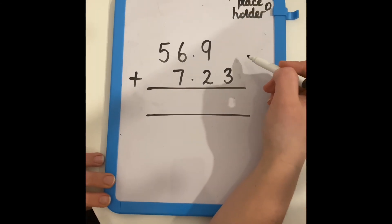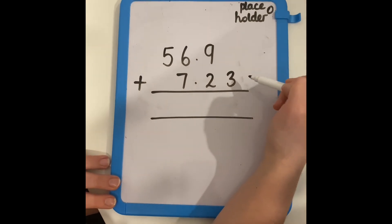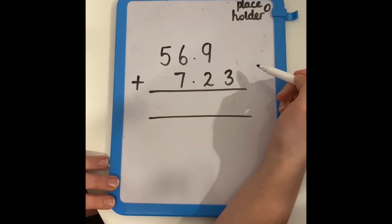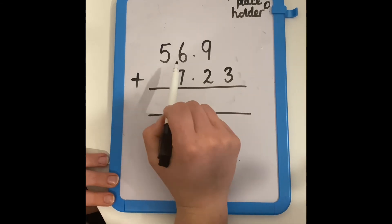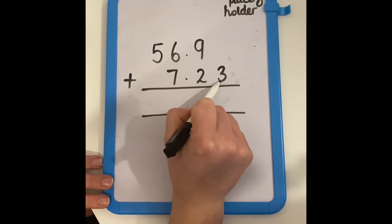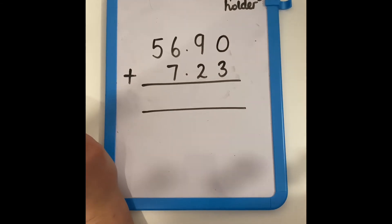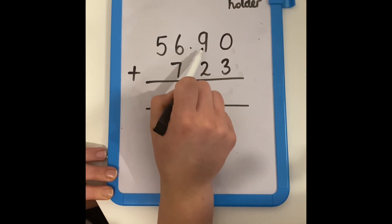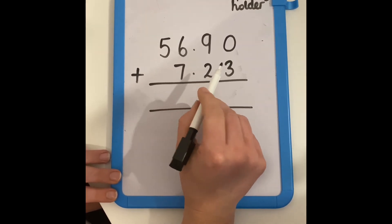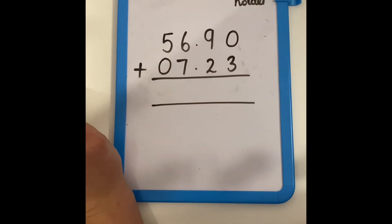We are now going to look at adding 56.9 and 7.23. Just like last time, I would like you to pause the video and make a note of which columns we need to use our placeholders in. You should have noticed that 56.9 doesn't have any hundredths, however 7.23 has three hundredths, so my first placeholder needs to go in the hundredths column. 56.9 has five tens, however 7.23 doesn't have any tens, so I need to use a placeholder in the tens column.